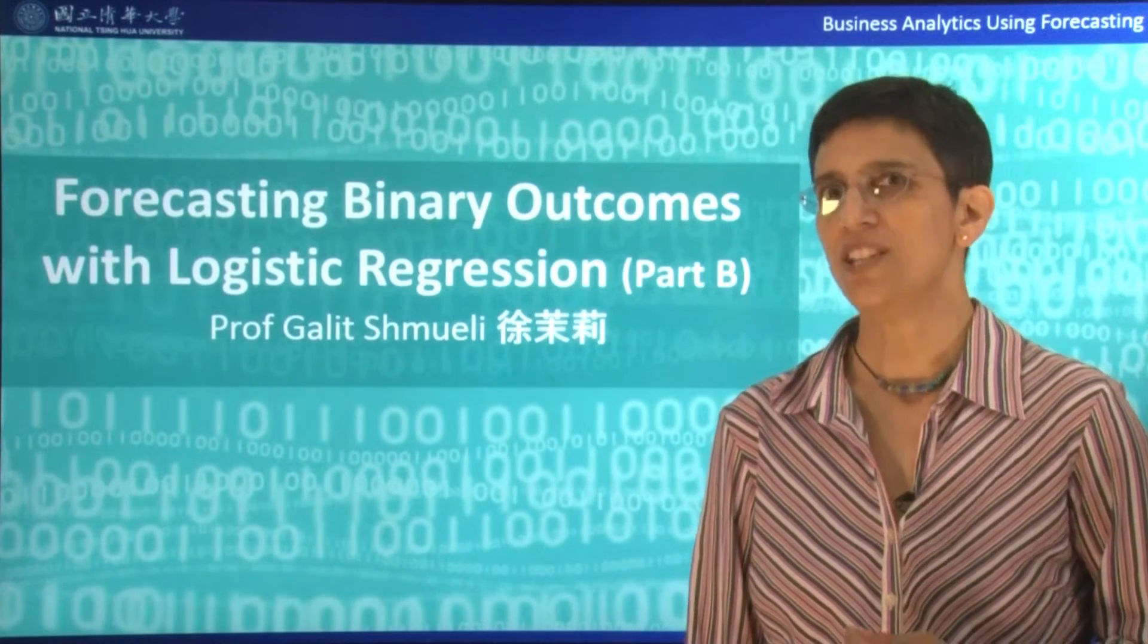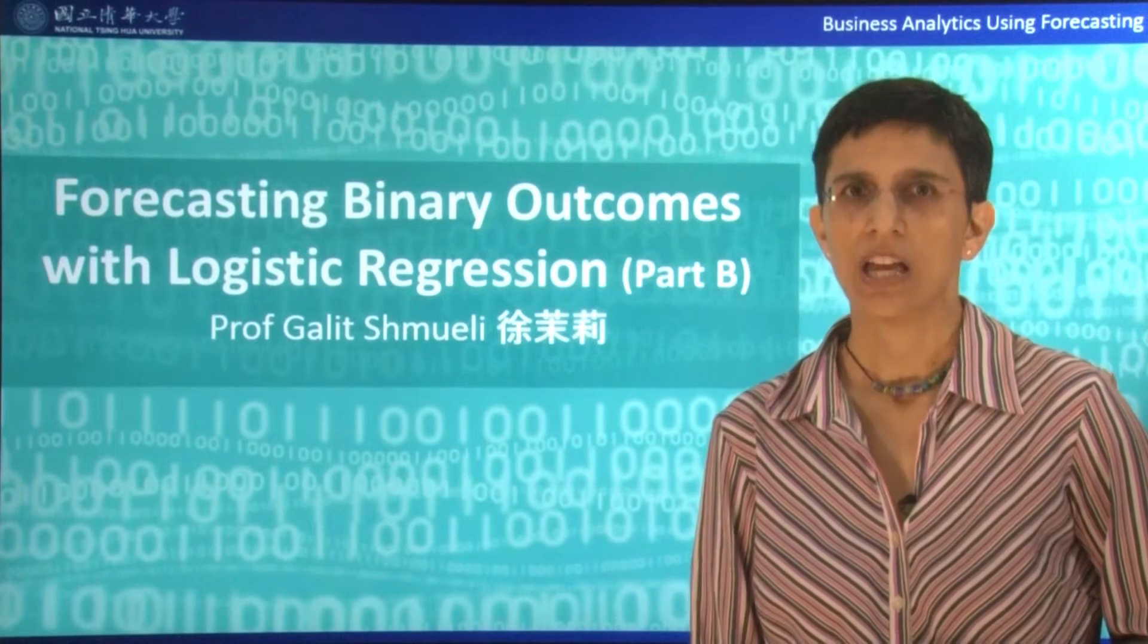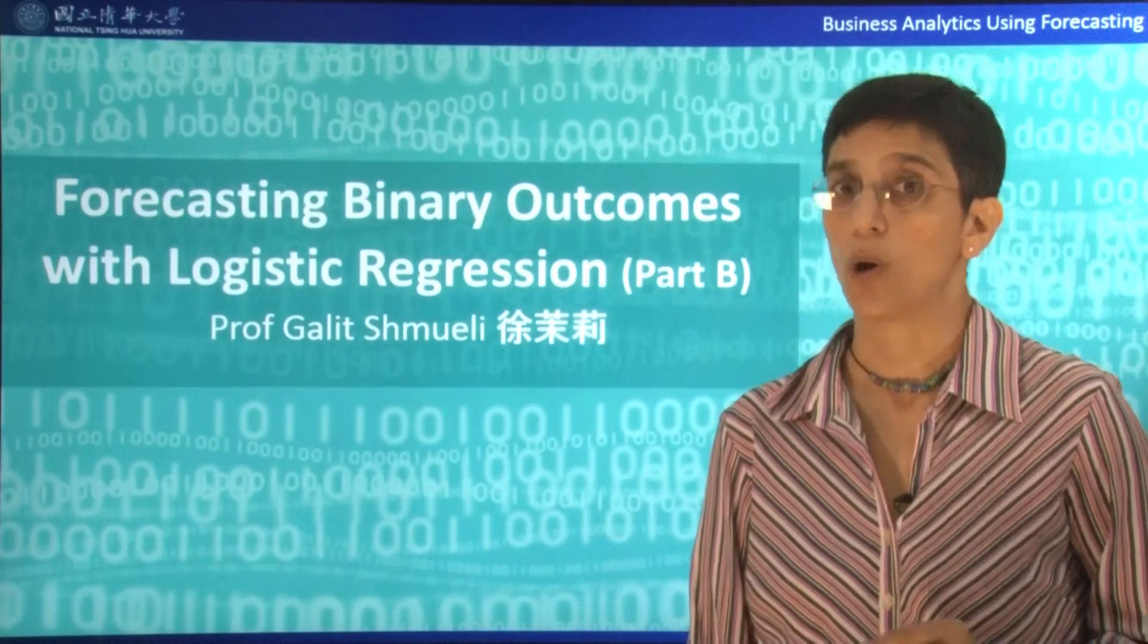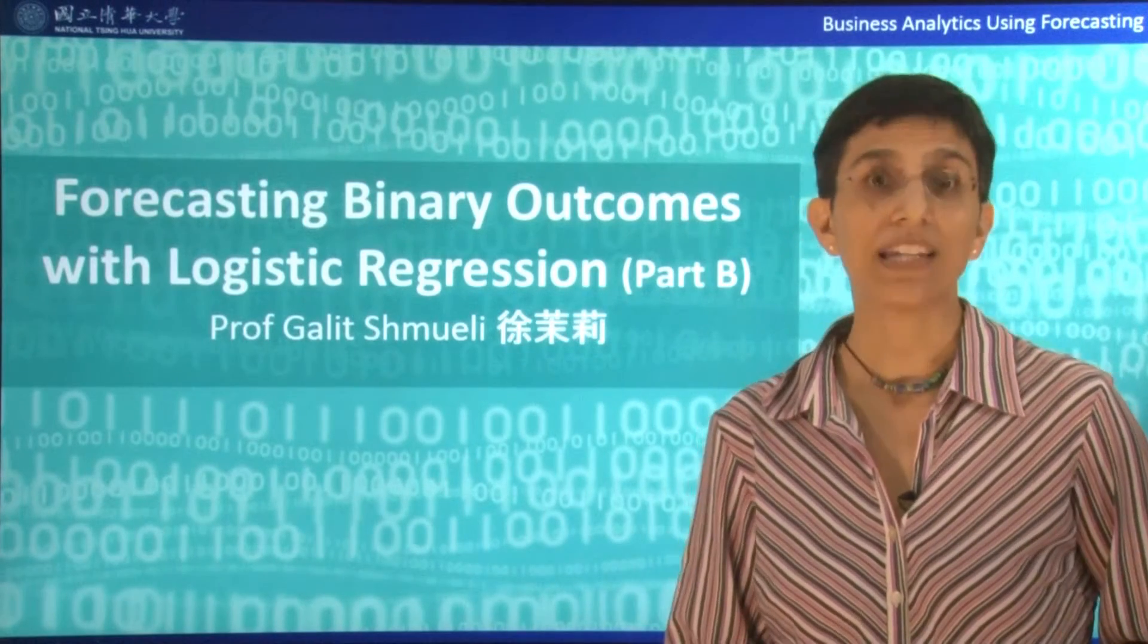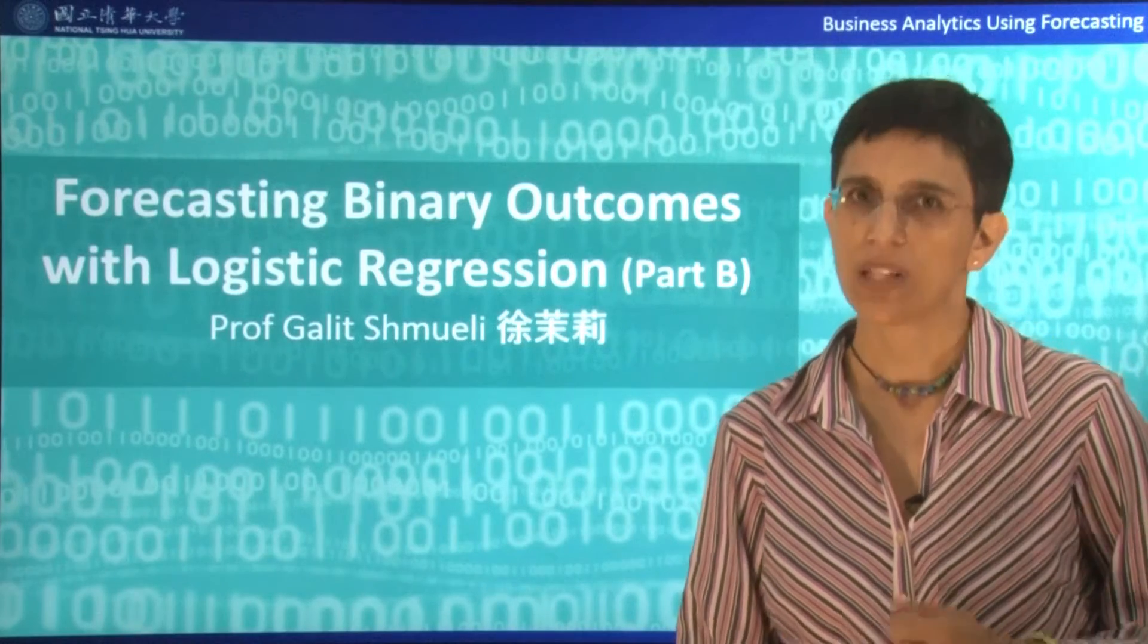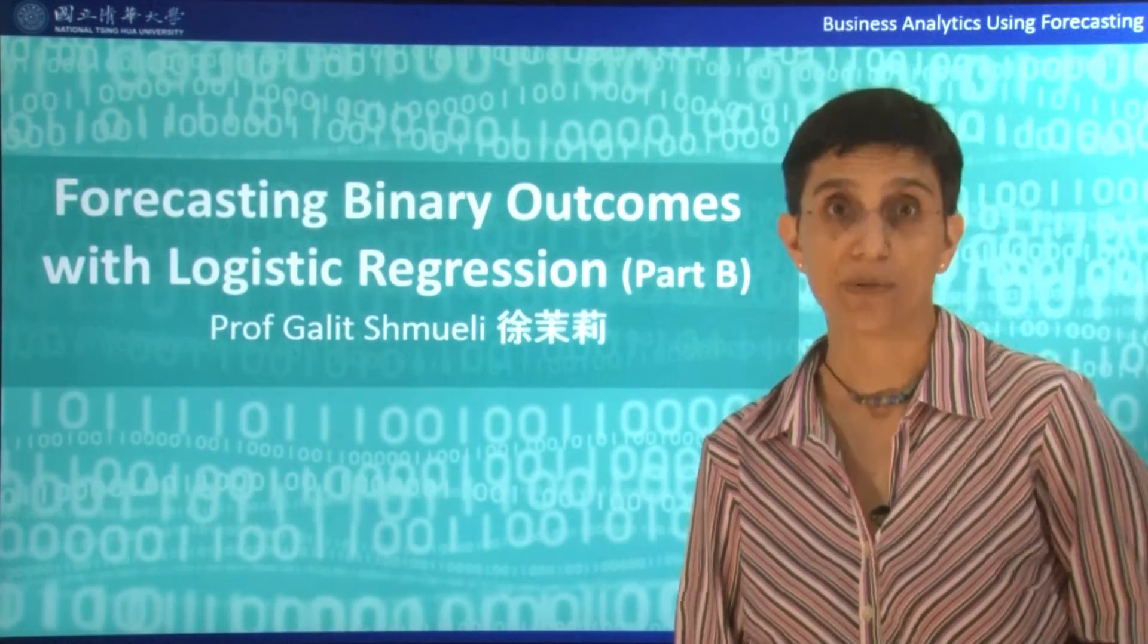If you try to use the output that we had before and generate a forecast, you'll see that we can get very strange values. We won't necessarily get a 0 or a 1, we won't even necessarily get a number between 0 and 1. So that's why typically we don't like using linear regression for forecasting a probability or a binary event.